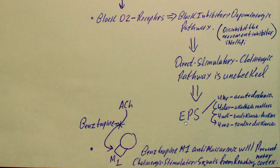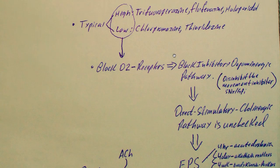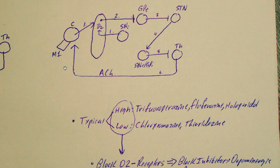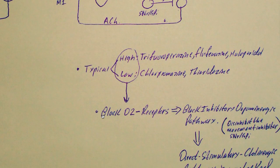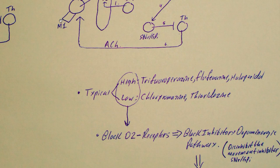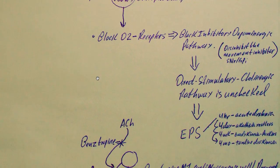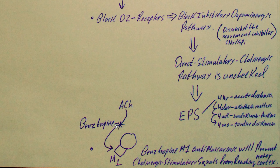Now, what do we do about those symptoms in somebody that has to take a typical antipsychotic? These ACH signals that are coming back to the cortex, we can block their receptor, this M1 receptor. And when we do that, we do it with benztropine.